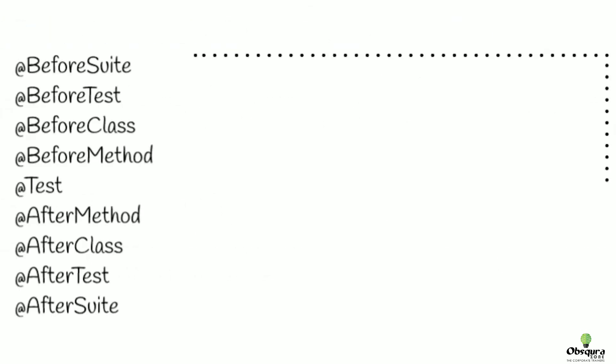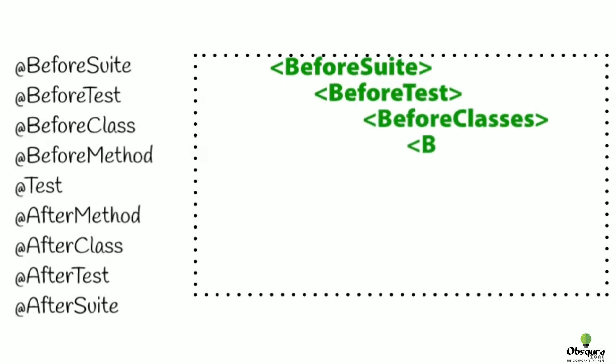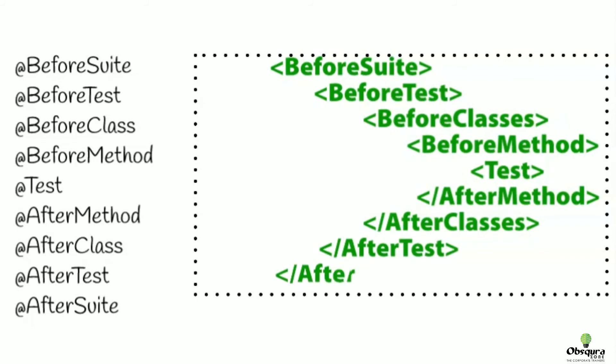Having understood this, let's move further and see how to write a test case using TestNG. This is the flow of execution: first @BeforeSuite, then @BeforeTest, then @BeforeClass, @BeforeMethod, then @Test, then @AfterMethod, @AfterClass, @AfterTest, and finally @AfterSuite. This is our execution flow.